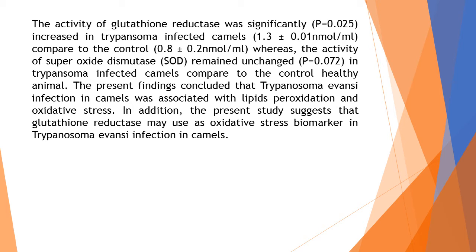The activity of glutathione reductase was significantly (P = 0.025) increased in Trypanosoma-infected camels at 1.3 ± 0.01 micromolar, whereas the activity of superoxide dismutase (SOD) remained unchanged (P = 0.072) in Trypanosoma-infected camels compared to the control healthy animals.